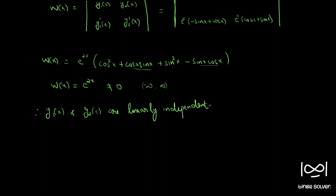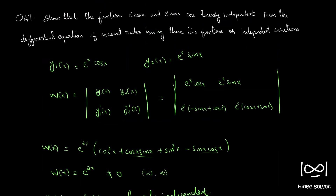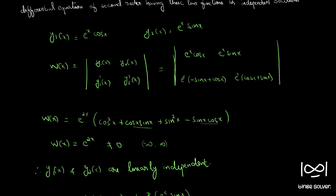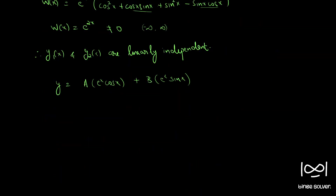Now we need to form a differential equation that has y₁(x) and y₂(x) as independent solutions. We write the general solution as y = A·e^x·cos(x) + B·e^x·sin(x). Let this be equation 1. Now differentiating equation 1: